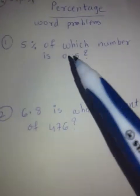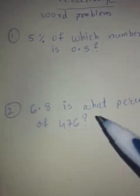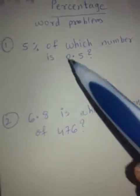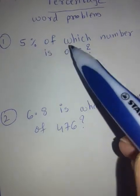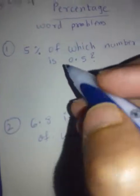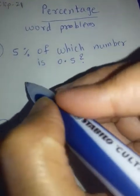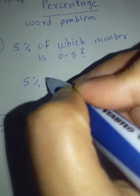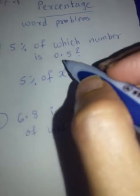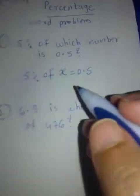Now before going to word problems, I want to discuss two typical types of questions where students get confused. Let's see how to solve them. This is also a kind of word problem only: 5% of which number is 0.5? How to solve this? Just go according to the language of the question. See — 5% of which number — write x because we don't know that number. Which number is 0.5? So this is 0.5, and now we know how to solve this.